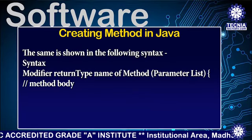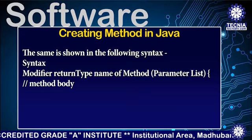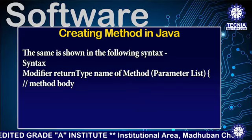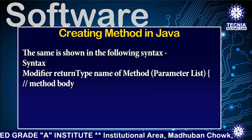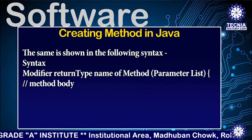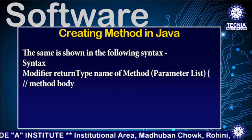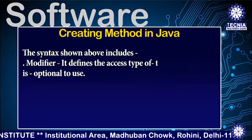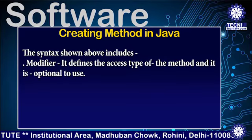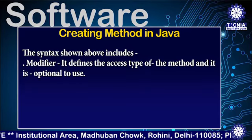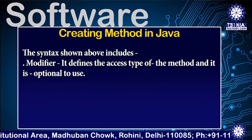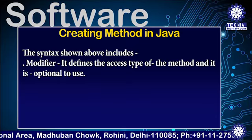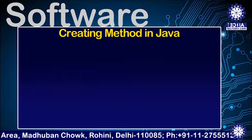Suppose there is one method m1. It contains a parameter list, body of the method, and return type of the method. Modifiers define the access type of the method and it is optional to use.